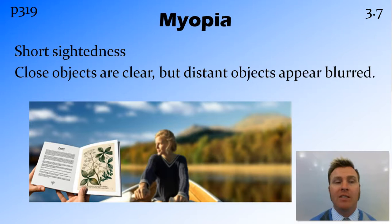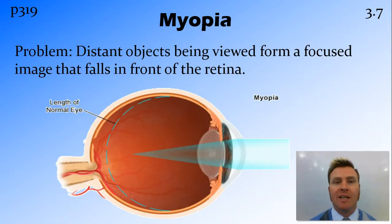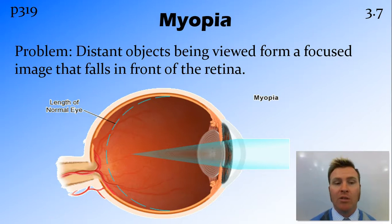Myopia is the opposite of this. This is short-sightedness — you can see things that are close to you, but you cannot see things out in the distance. The reason for this is that the lens is too convex, meaning the focal point is in front of the retina rather than on it. This could be caused by having an eye that is too long from front to back, meaning the focal point falls in front of the retina.